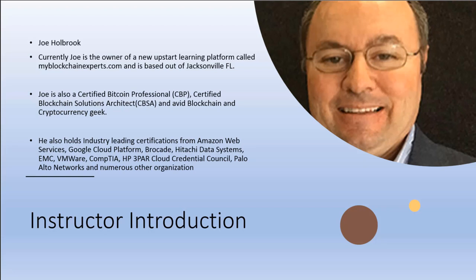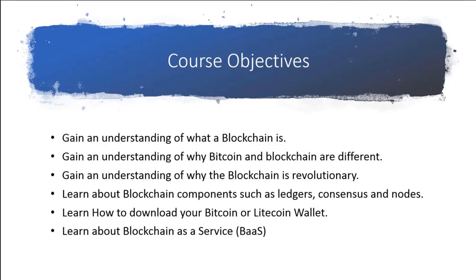Let's get started finding out about what we're going to learn. First, let's cover the course objectives. We want to make sure you gain an understanding of what a blockchain is, understand why Bitcoin and blockchain are different, and talk about the similarities. We'll gain an understanding of why the blockchain is so revolutionary, then talk about ledgers, consensus, nodes, and other components. We'll learn how to download your Bitcoin or Litecoin wallet, show you how a transaction works, and learn about possibilities such as running a blockchain as a service.